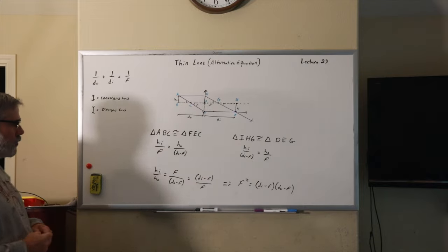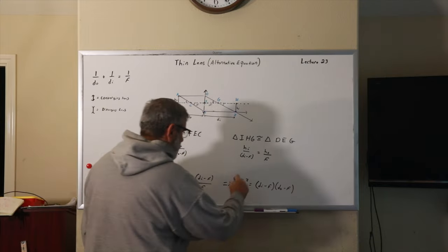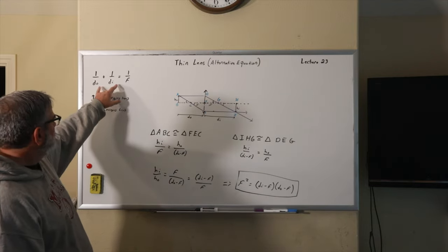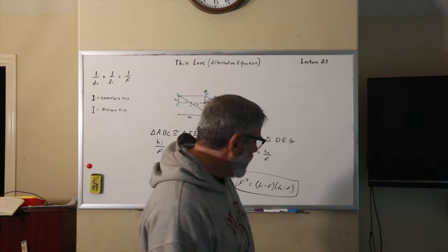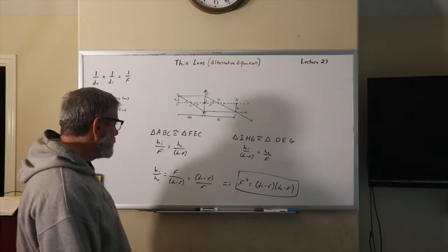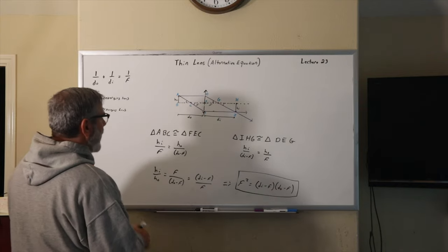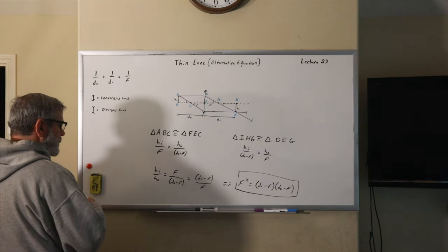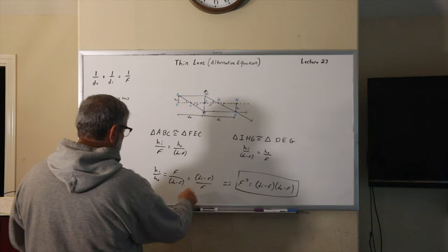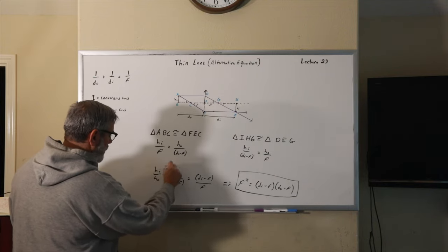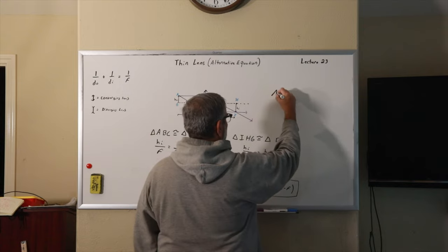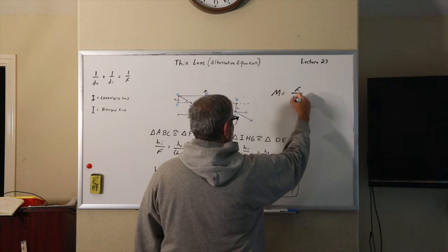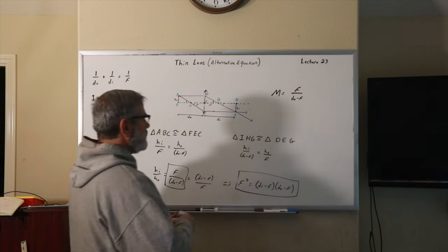And so that's kind of a new version of the lens, an alternative version of the lens equation. It is the same as this if you rework this. But sometimes this can be more convenient. And so one place where it is, is in terms of the magnification that you get with a lens, which we can write now as H sub I over H of O. So we can pick either one of these. It's usually more convenient to pick this one. So the magnification will be equal to F over D sub O minus F.